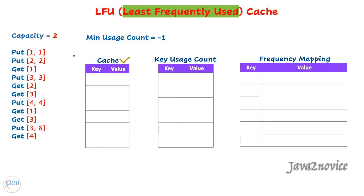Our cache comes with limited capacity. Let's assume that our cache capacity is two — it can store a maximum of two key-value pairs only. Anytime you try to insert a new key-value pair when it is at its maximum capacity, it must evict one of its key-value pairs to create room for the new insertion. The eviction policy is least frequently used.